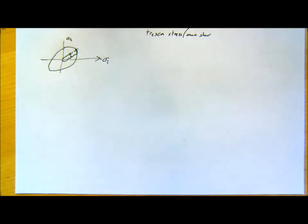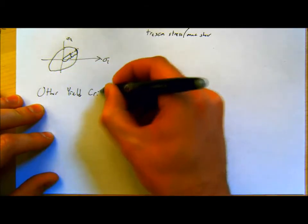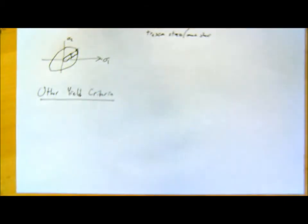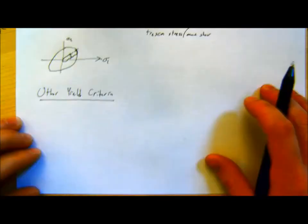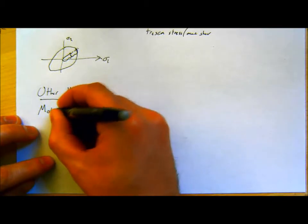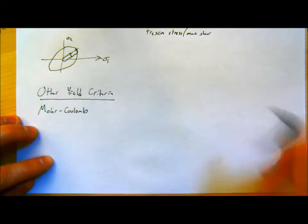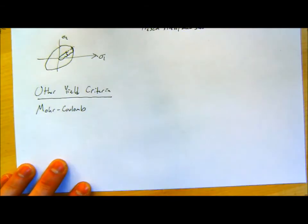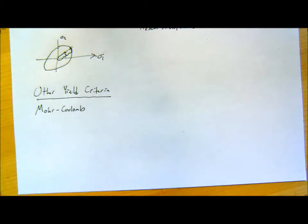I'm just going to show a couple other types of failure criteria that are fairly popular or fairly common that you may hear of — yield criteria. I won't necessarily be testing you on this, but I think they're kind of interesting and useful to know. One of the more common ones is Mohr-Coulomb. For our max stress criteria, there was a big difference between tensile and compressive strength — Mohr-Coulomb takes that and cuts it off. It's good for brittle materials like concrete and soils.